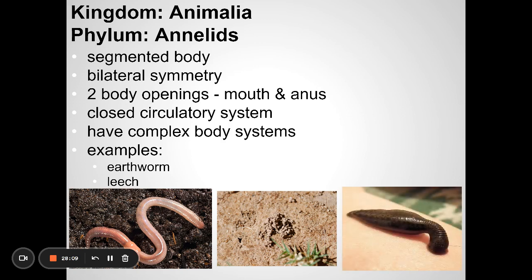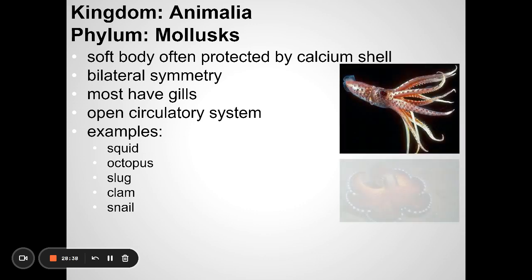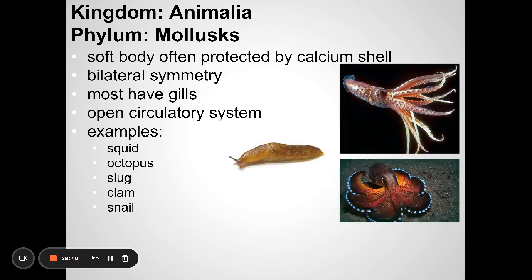Another segmented worm is the leech — another parasitic worm. Leeches attach to animals briefly, feed on their blood, then detach and digest it. Then we have mollusks — invertebrate animals you've probably eaten: squid, octopus, clams, snails, oysters. These are all animals; they typically have gills, and many make a shell as well.